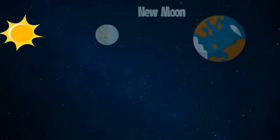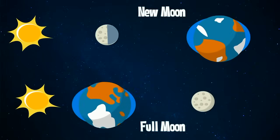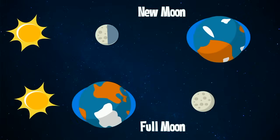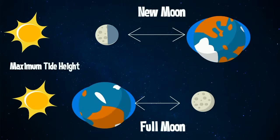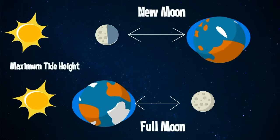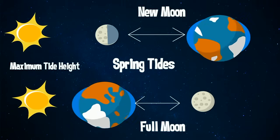Approximately twice a month, around new moon and full moon, when the sun, moon, and earth form a straight line, the tidal force is at its maximum, and the tidal range is also at its maximum. These are called spring tides.